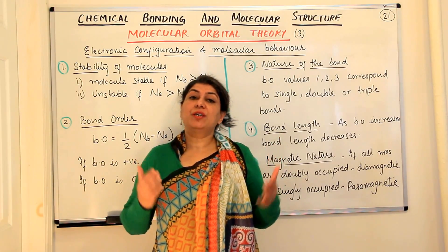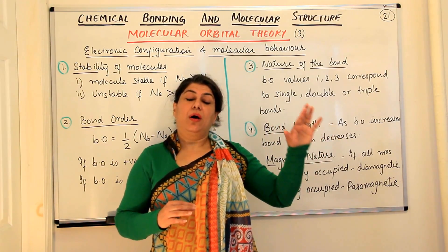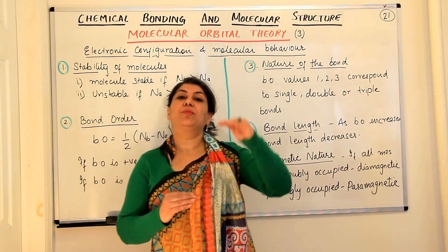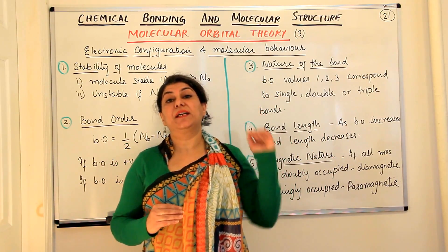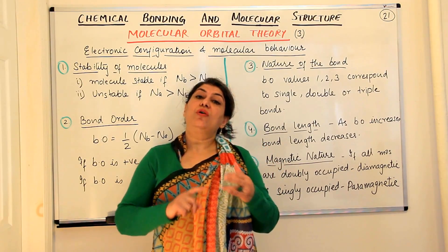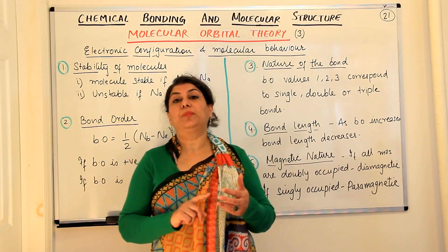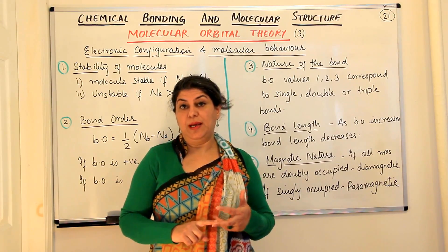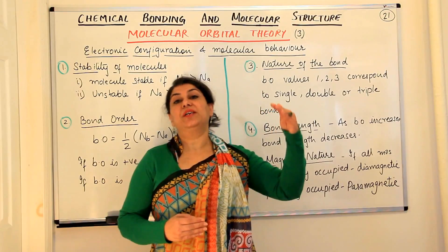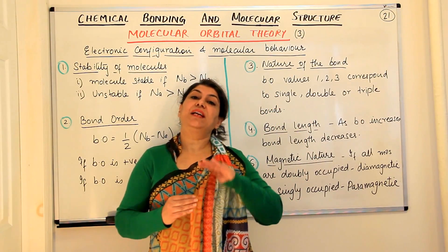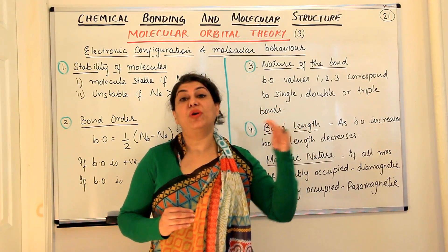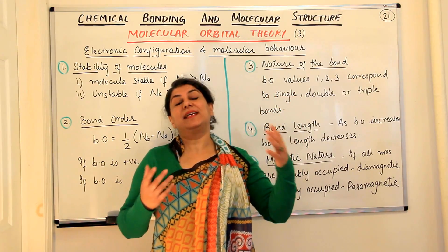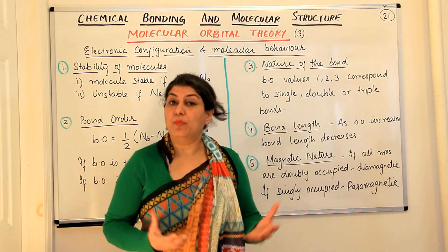Just like in atoms, electrons fill up orbitals according to increasing energy levels following the Aufbau principle, Hund's rule of maximum multiplicity, and the Pauli exclusion principle. In molecules also, we have similar energy levels and we can have an electronic configuration of molecules. The filling up of these electrons is the electronic configuration of the molecules.